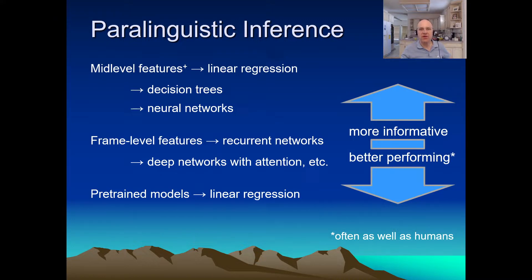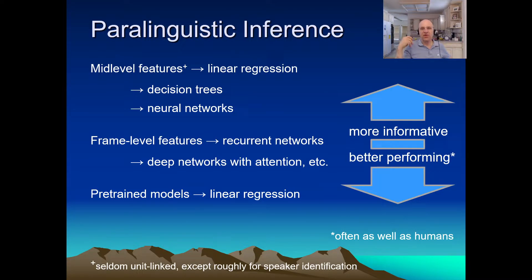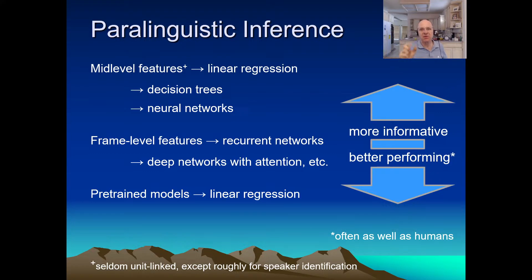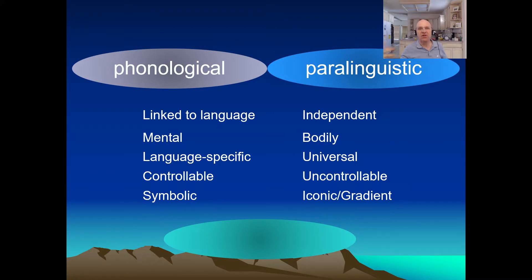As we saw in the previous lecture, there is a tendency for the more recent models to perform much better, but to be less informative. If you're interested in what it is about the prosody that conveys a certain paralinguistic function, the simple models are probably the way to go. The features most useful for paralinguistic discriminations differ from those most useful for speech recognition. For speech recognition, features are typically unit-linked, marking syllables and words. For paralinguistics, they tend to be more distributed — if I'm happy, that will usually come through on every word I say, rather than be localized and linked to some specific word.